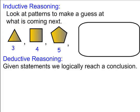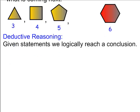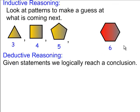Inductive reasoning is when you look at whatever circumstances are happening around you, and from there you reach a conclusion or guess as to what the next circumstance will be. So if I throw some regular figures — one with three sides, one with four sides, one with five sides — I wonder what the next item in the pattern is going to be. Surprise, it's going to be a six-sided regular figure. So that was inductive reasoning: you're looking at what's happening and you make a guess as to what's happening in the future.